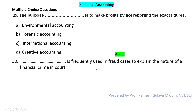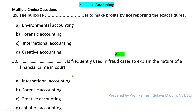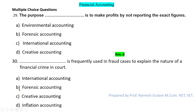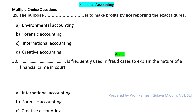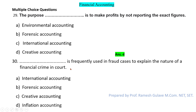The next question says: dash is frequently used in fraud cases to explain the nature of financial crime in court. Again, this is forensic accounting. Forensic accounting is frequently used in fraud cases to explain the nature of financial crime. So option B is the right answer. Make sure to watch the second video with more important MCQs. Thanks for watching — like, share, and subscribe to the channel.